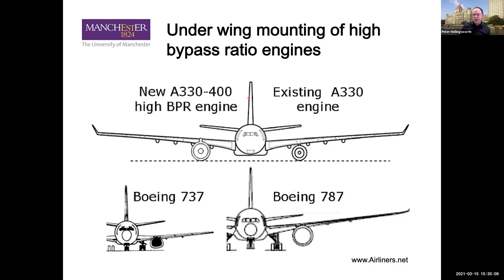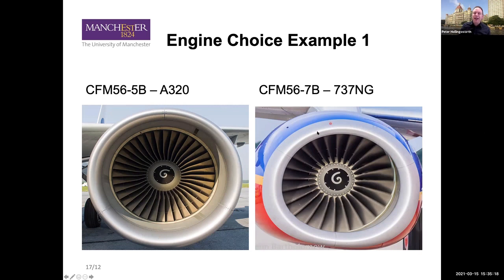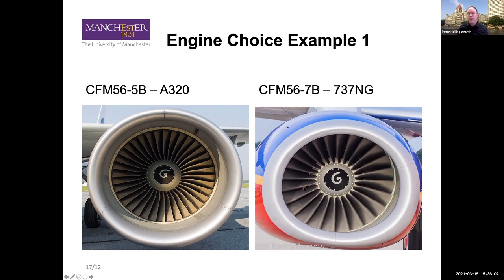On why some inlets are circular and some are not: the best example is the original 737. The reason is ground clearance — accessories that are normally underneath the engine were moved to the sides and the profile was flattened. This does affect inlet airflow and can cause instabilities, but it's well-studied. The Trent 700 on the A330 also has a flattened nacelle. The engine itself is circular — it has to be — but the nacelle profile is flattened as a design trade for that aircraft.